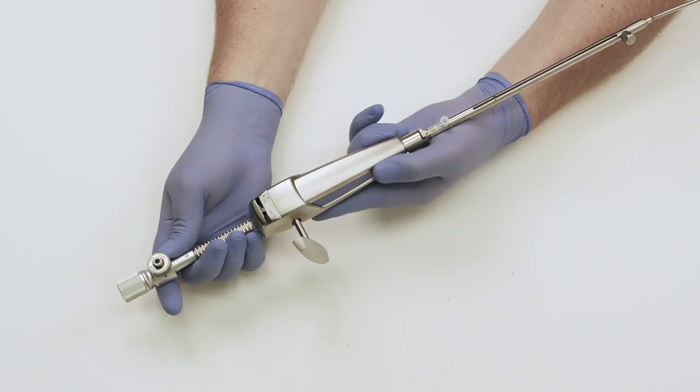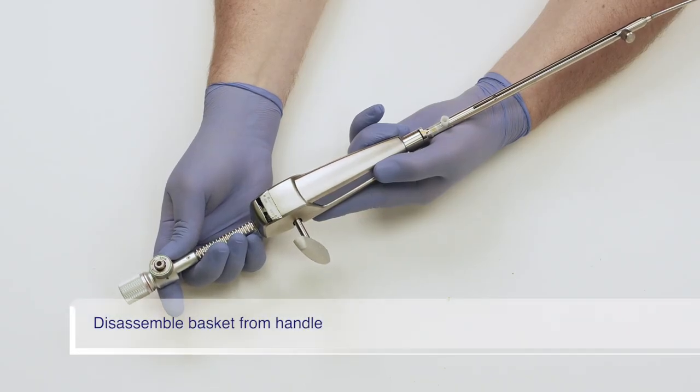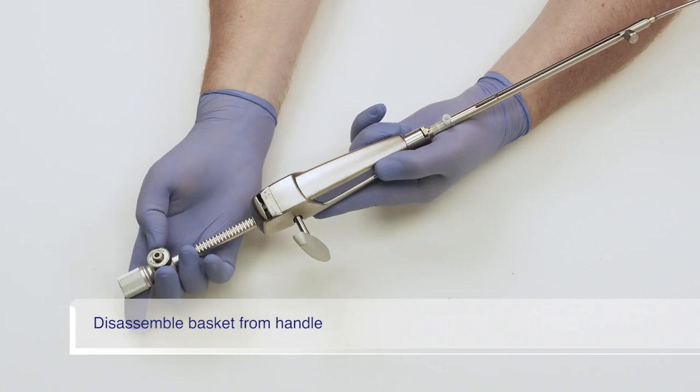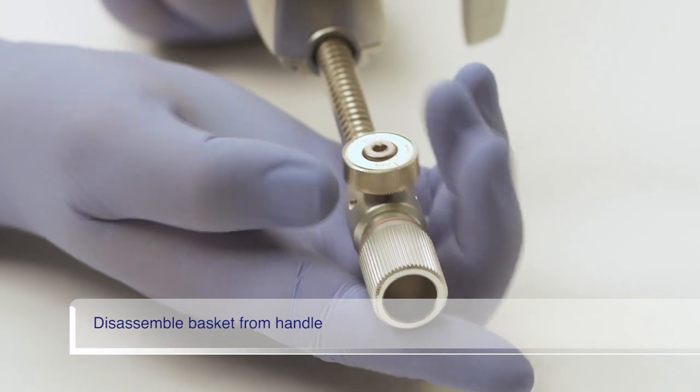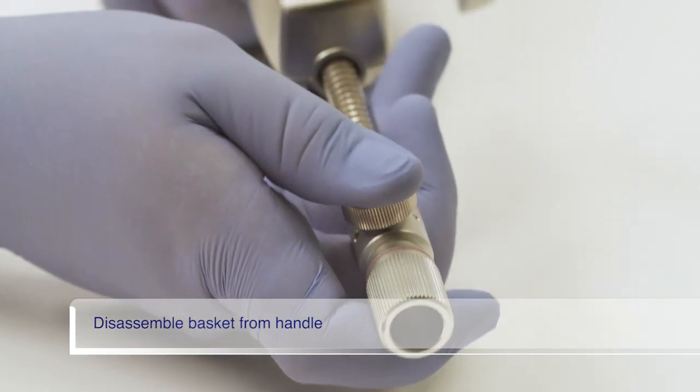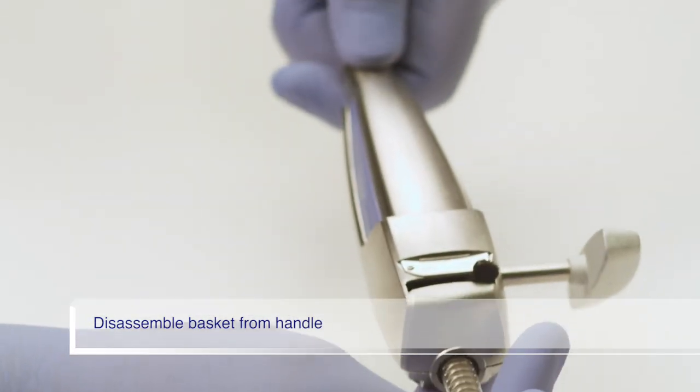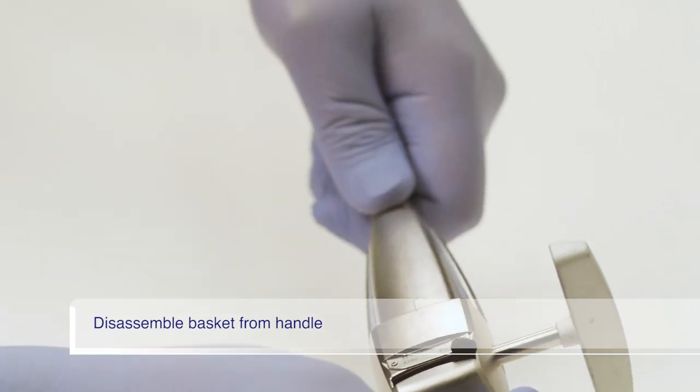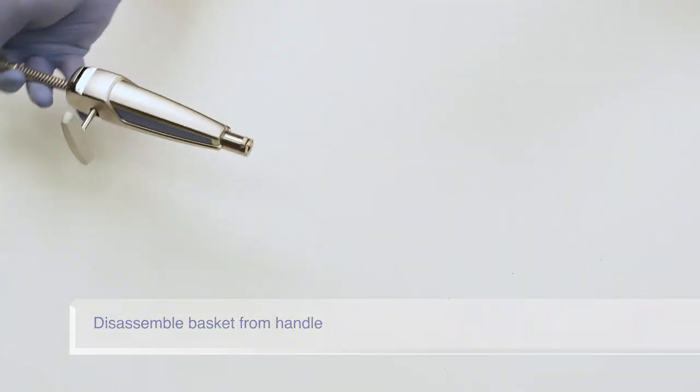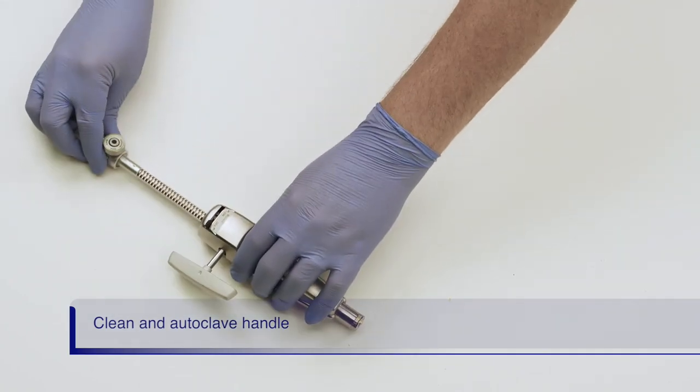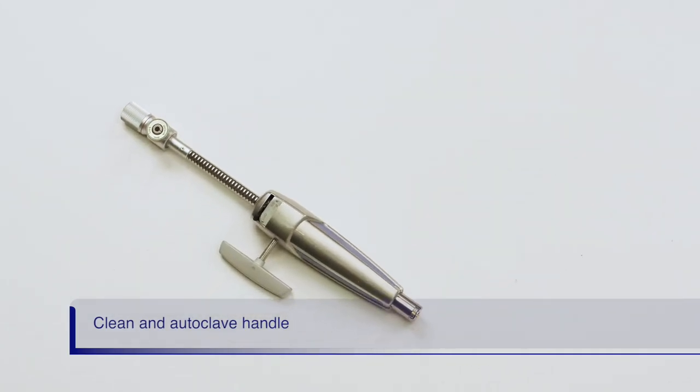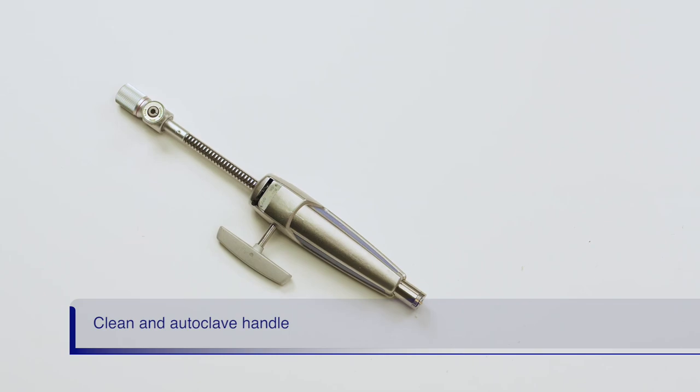Now that we are done crushing the stone, we need to disassemble the handle and basket. First, loosen the release button by turning it counter-clockwise, and then push the release button and yellow button simultaneously while pulling the handle away from the basket. After the procedure, dispose of the basket. The handle is reusable and needs to be cleaned and autoclaved.